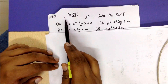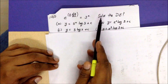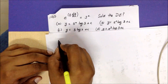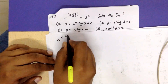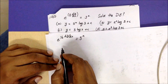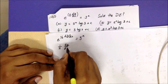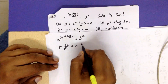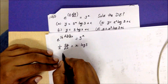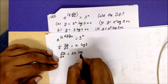Moving on to the next question: we have e^(½·dy/dx) = 3^x, and we have to solve this differential equation. Taking natural log on both sides: (1/2)·(dy/dx) = x·log3. Therefore dy/dx = 2x·log3.